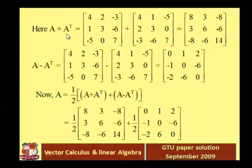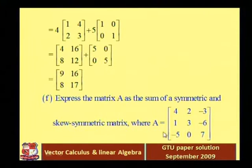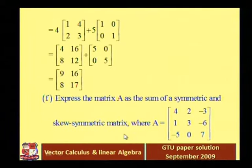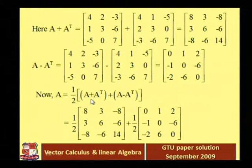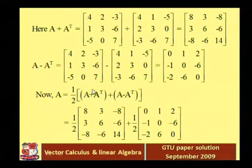Here A plus A transpose. Our target is to write this matrix A as a sum of the symmetric and skew symmetric matrix. We know that A can be expressed as A plus A transpose plus A minus A transpose divided by 2, where the first matrix is A plus A transpose divided by 2 and the second matrix is A minus A transpose divided by 2.